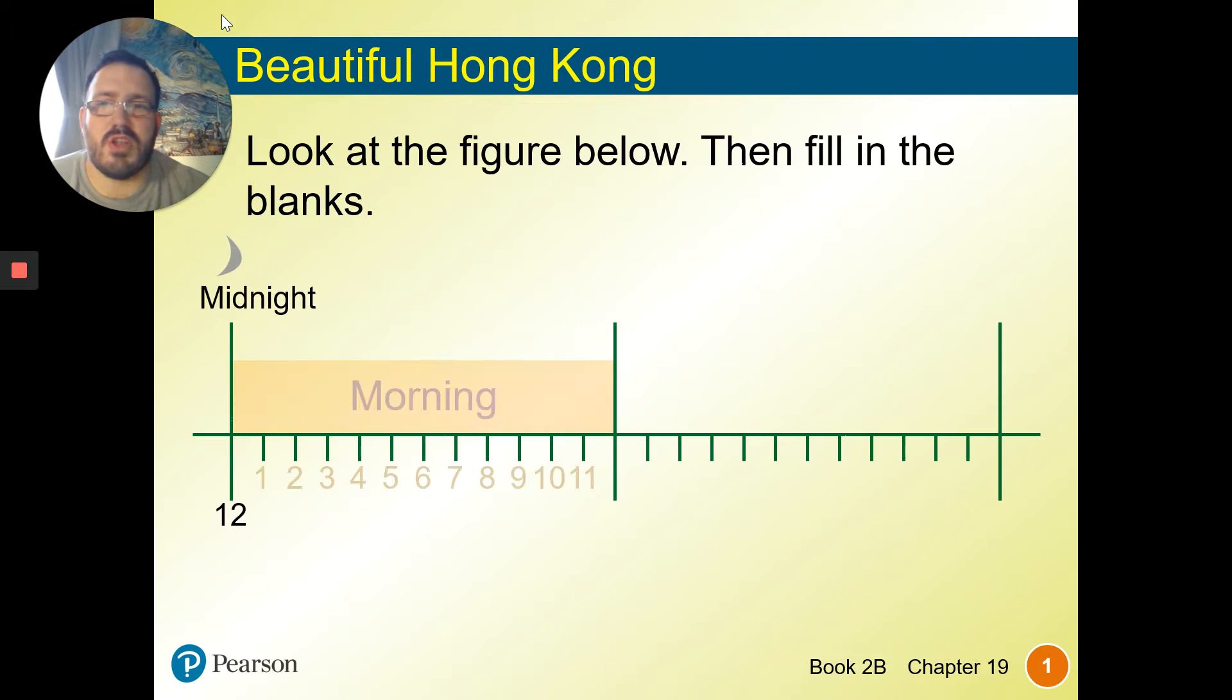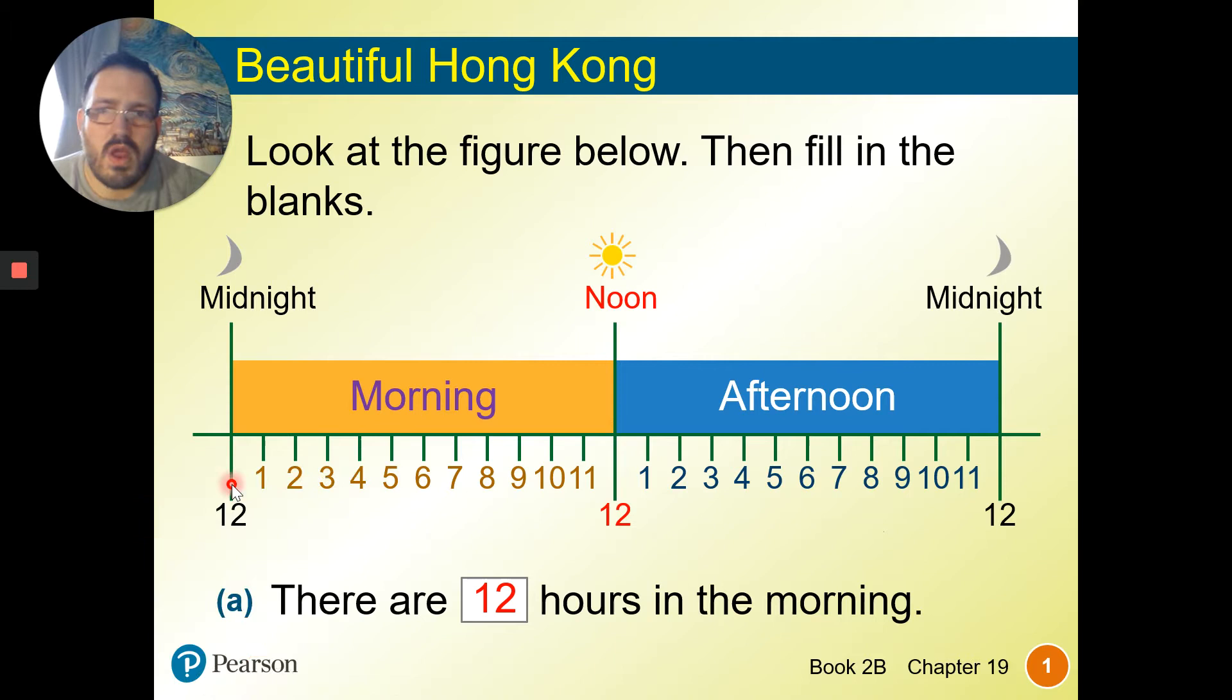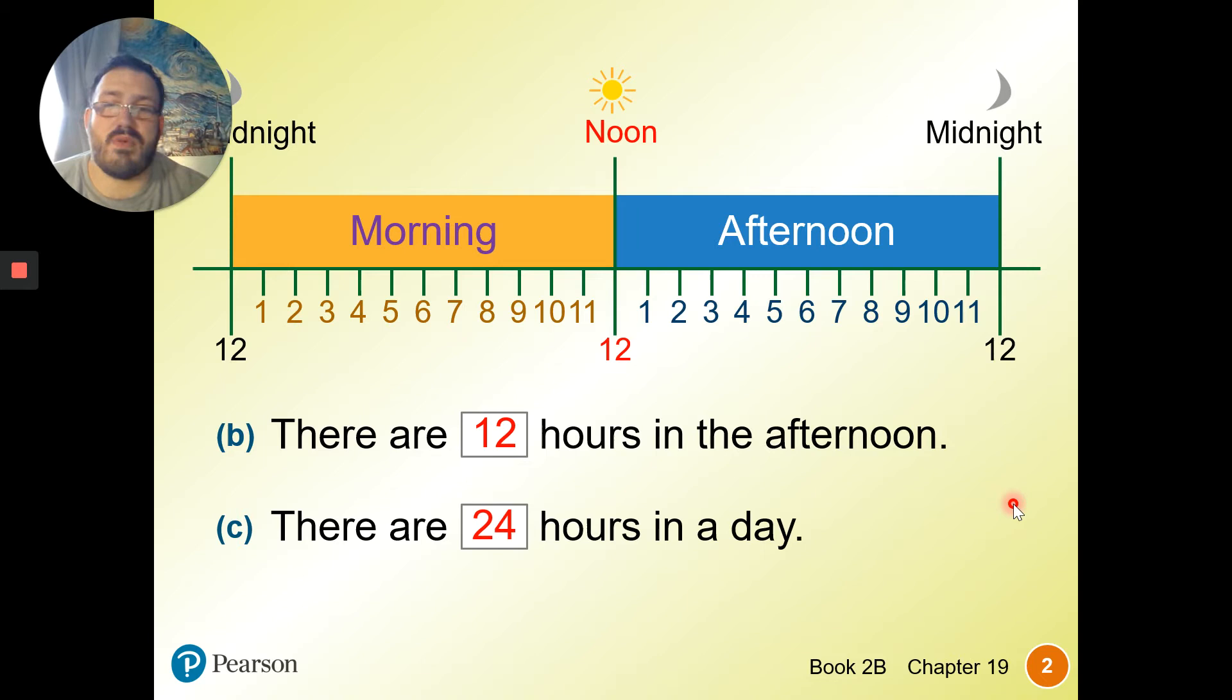Let's look at the figures below. We have midnight, noon, and midnight. So 12 o'clock at midnight is the start and end of the day, and 12 noon is the middle of the day. Anything in between that is the morning, and anything after that is afternoon. So the day is split into 12 hours in the morning and 12 hours in the afternoon, making up 24 hours in a day.